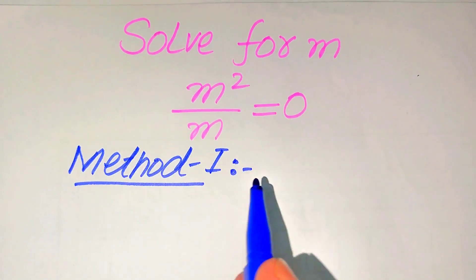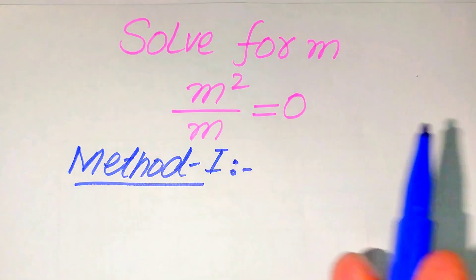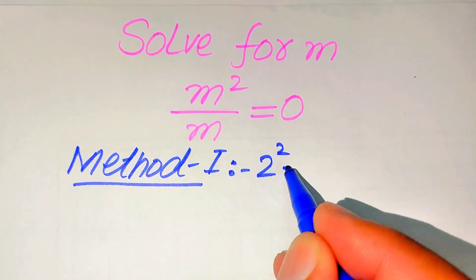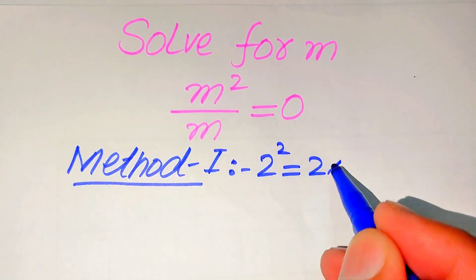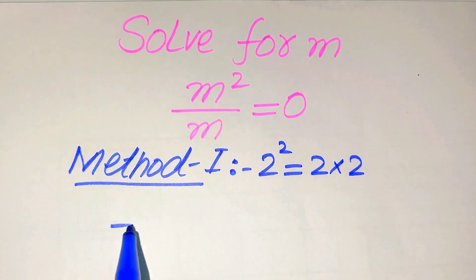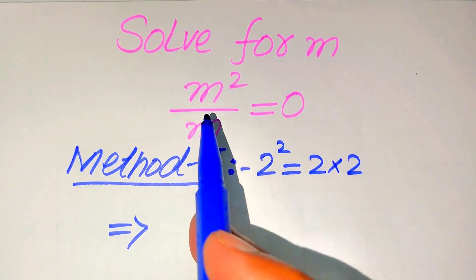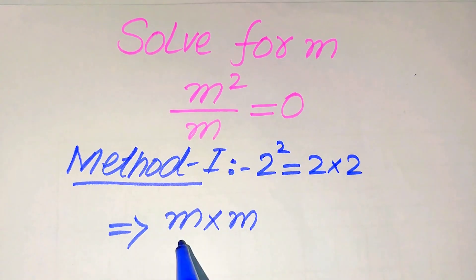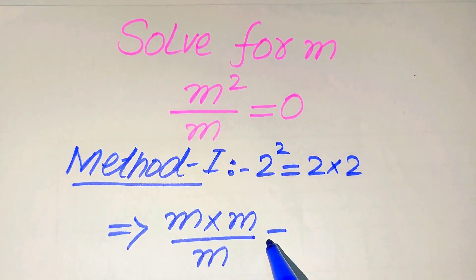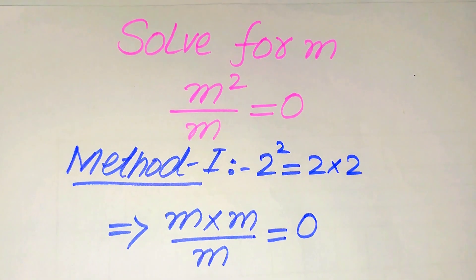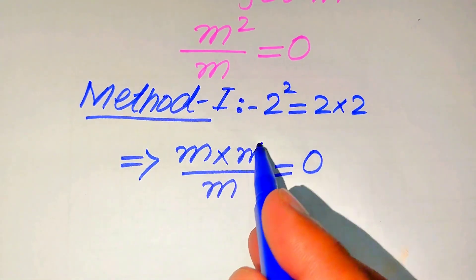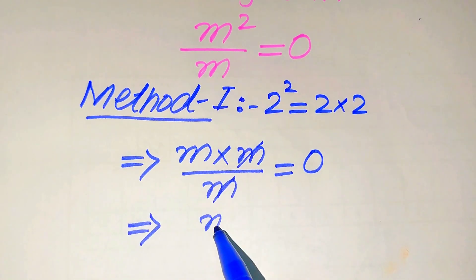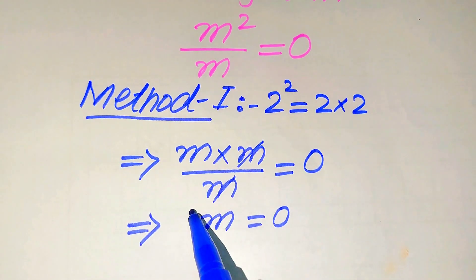In the first method, we break m squared — because we know that 2 squared is written as 2 multiplied by 2 — so in the same pattern we break m squared as m multiplied by m, divided by m, equals 0. You can see here that this m cancels out with this m, and from here we easily get the value of m equals 0.